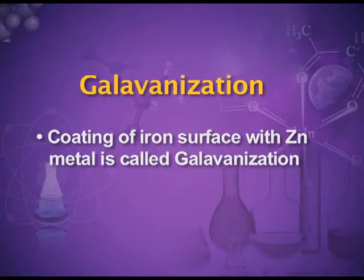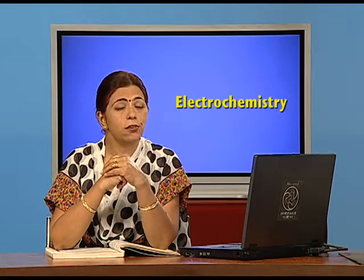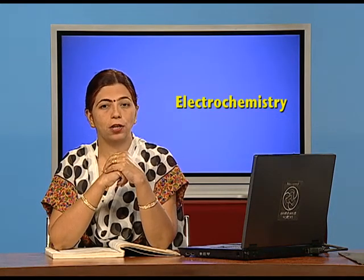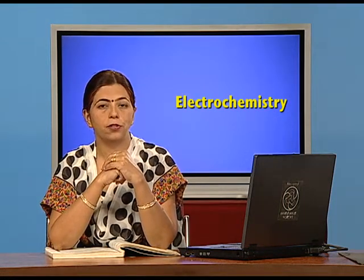We can also use a more reactive metal — either by coating the iron article with that metal. For example, coating iron with zinc is known as galvanization. In place of iron, that reactive metal loses electrons and gets oxidized, and the iron article is saved. This is also known as sacrificial protection. We can also use another metal like tin.